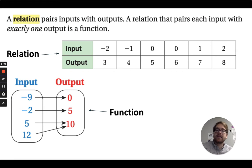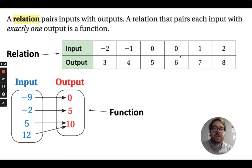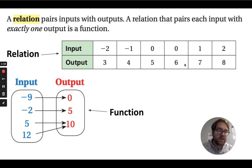You can see here in this image that this top table shows a relation, because zero is going to two different outputs. The same input is going to two different outputs, and that makes it a relation. It's still a relationship between numbers and values, but it's not specifically a function because one input is going to multiple outputs.